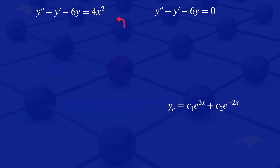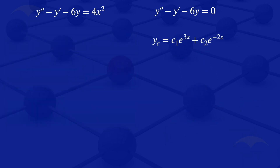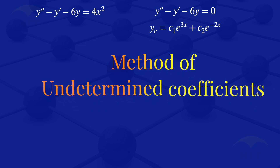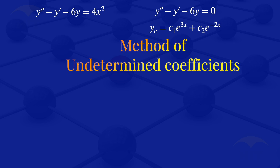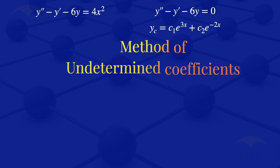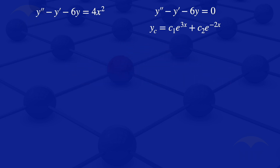We have found the complementary solution; we now want to find the particular solution. To find the particular solution, we are going to use the method of undetermined coefficients. For this method, we look at the right-hand side — the 4x squared — and its form will determine the particular solution.